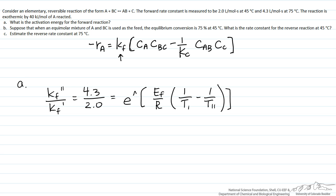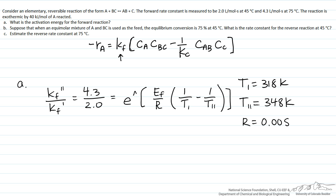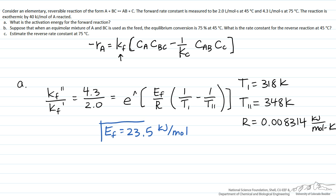We substitute in T1 = 318 K and T2 = 348 K, using absolute temperature, and R in units of kilojoules per mole per Kelvin. Our only unknown is Ef. Taking the log of both sides and solving, we get Ef just over 23 kilojoules per mole — the activation energy for the forward rate constant.